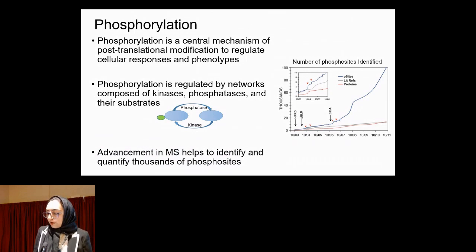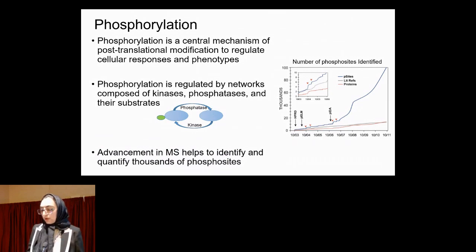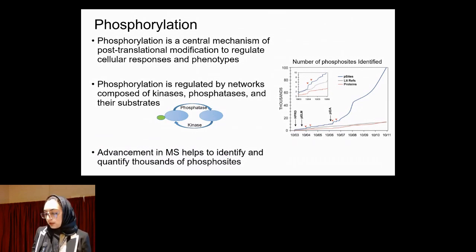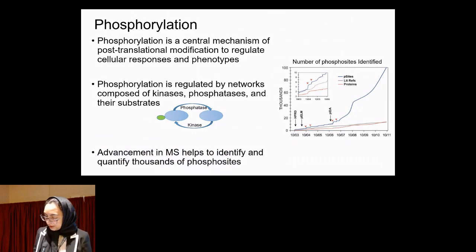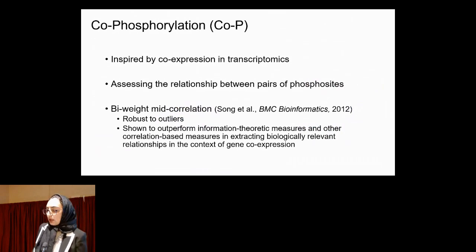With the advancement in mass spectrometry and high-throughput analysis, the number of phosphosites that have been identified is increasing rapidly, as shown by the blue line here over time. We can now identify thousands of phosphosites in different experiments.